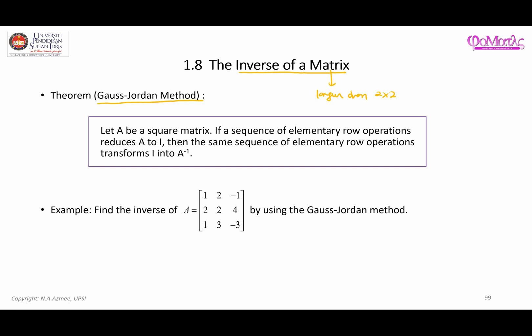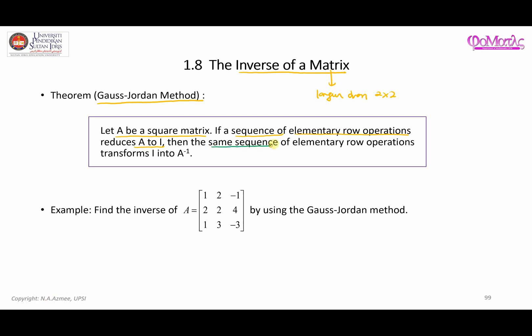Here is a bit of explanation. If A is a square matrix and you perform a sequence of elementary row operations, and these operations are able to reduce your matrix to an identity matrix, then by taking the same sequence of elementary row operations, applied in the same order, that process will be able to turn the identity matrix into the inverse of matrix A.